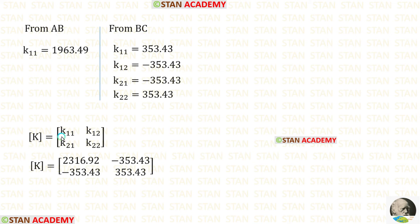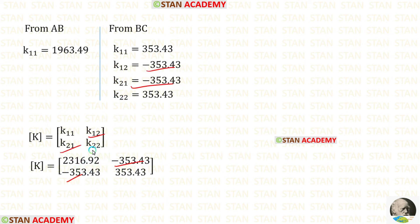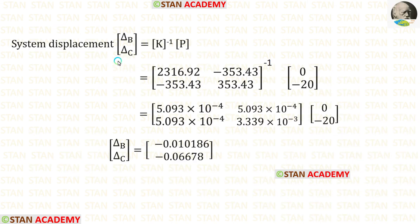For K11 we have two contributions and we add both of them together to get the assembled value. Then we apply K12, K21, and finally K22. The global stiffness matrix K and the load matrix P have now both been determined.